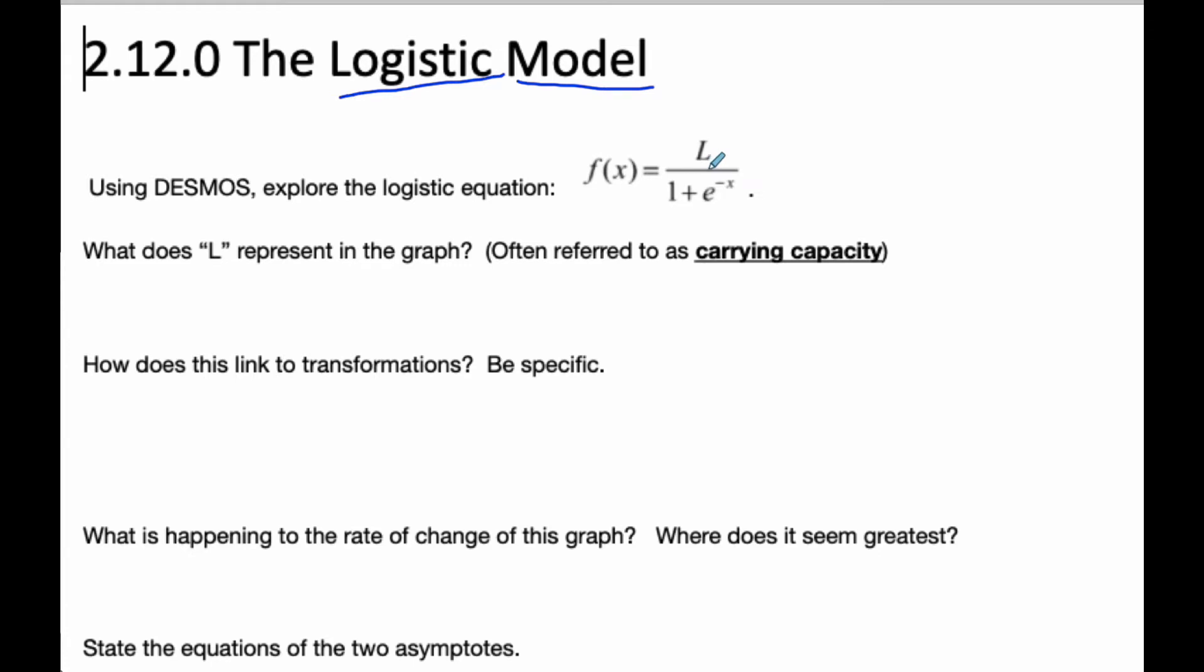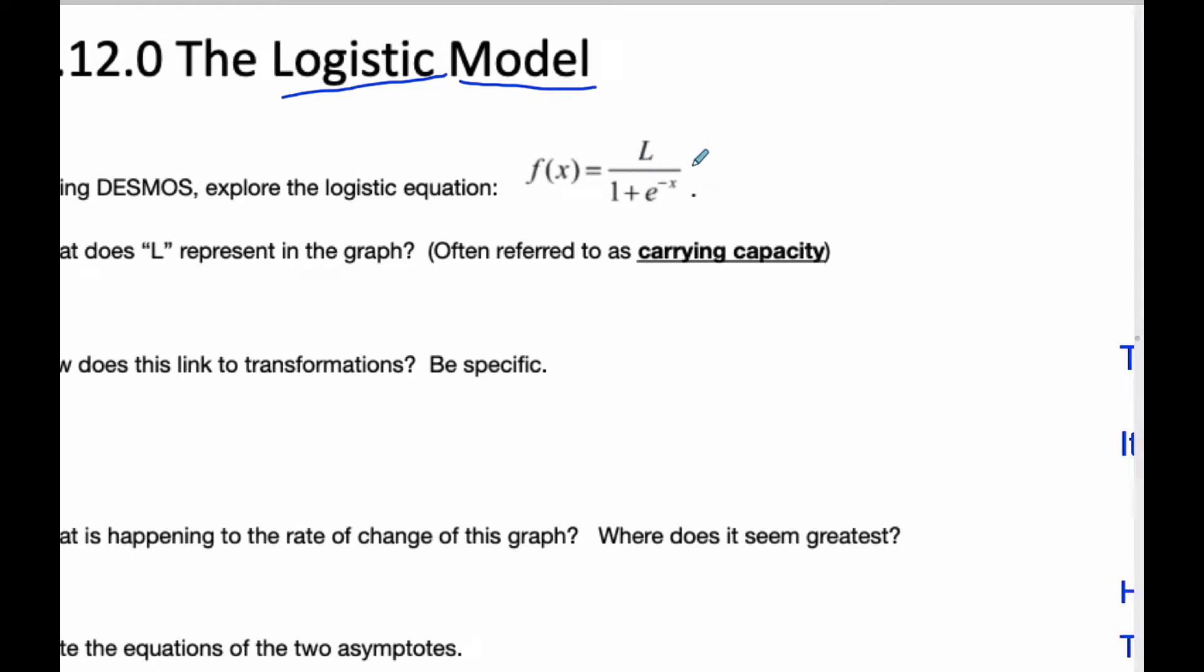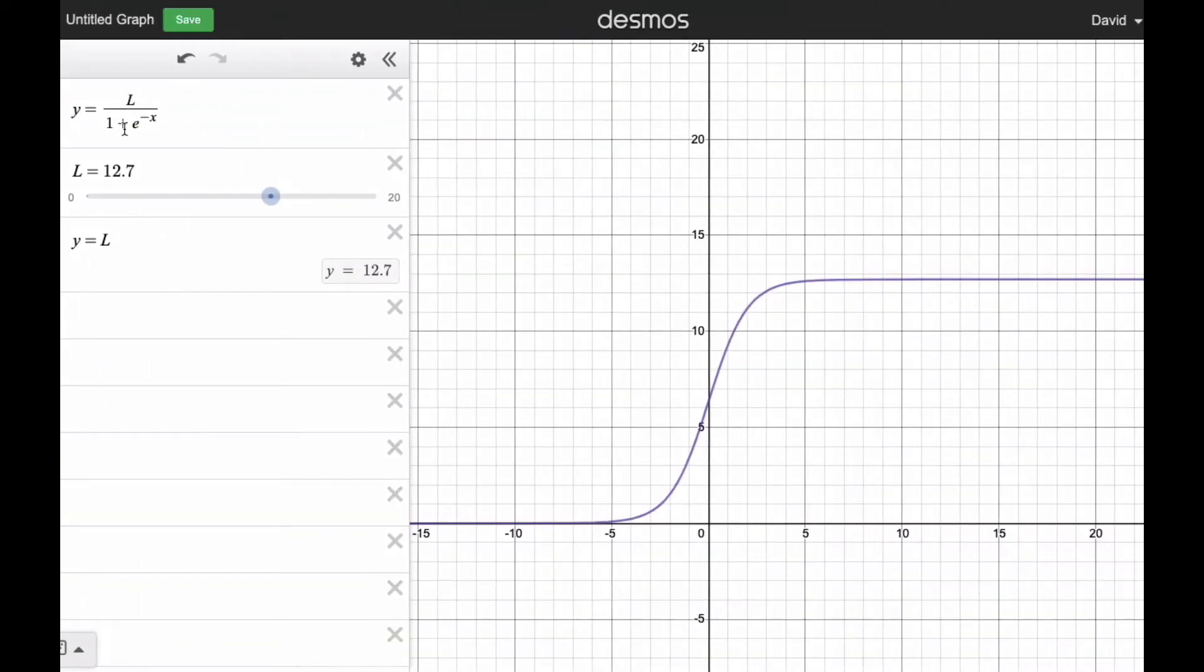Logistic models have this kind of configuration. So let's look at L. In Desmos, I've got L up top and I've got this fixed on the bottom. The logistic model has this configuration where it's flat here pretty much, then it grows and it flattens out again.